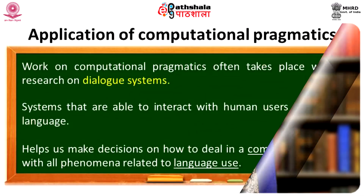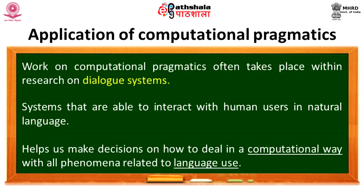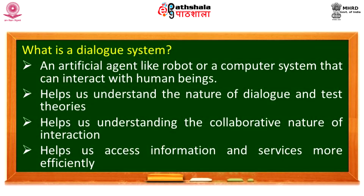Computational pragmatics is a very challenging field, and one of its applications is dialogue systems. As we have seen, dialogue systems are able to interact with human users in natural language. They help us make decisions on how to deal computationally with all phenomena related to language use. A dialogue system is an artificial agent — like a robot or a computer system — that can interact with human beings. It helps us understand the nature of dialogue, test theories, understand the collaborative nature of interaction, and access information and services more efficiently.